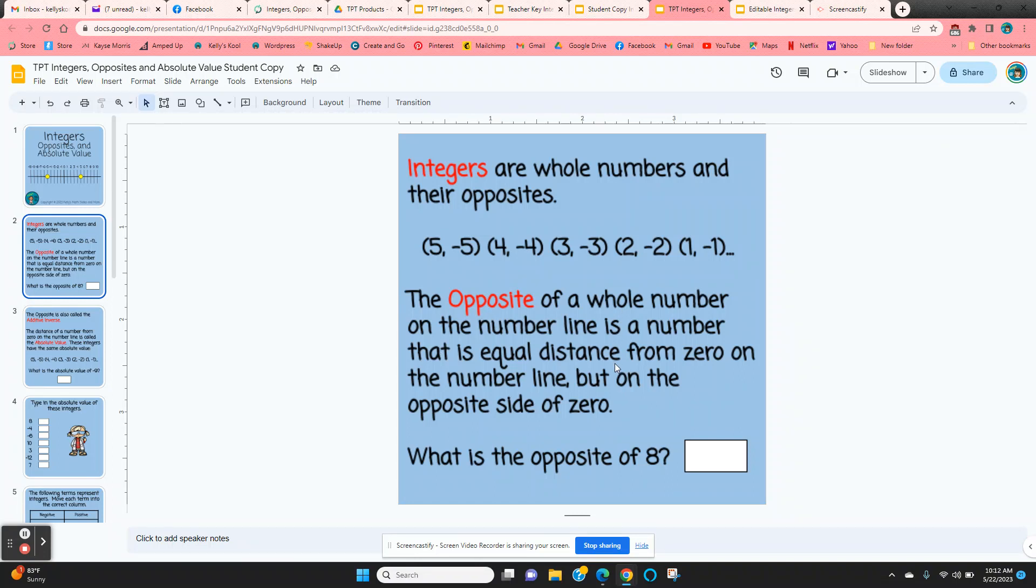The opposite of a whole number is equal distance from zero on the number line, but on opposite sides. It asks the students, what's the opposite of eight? They just type that in.